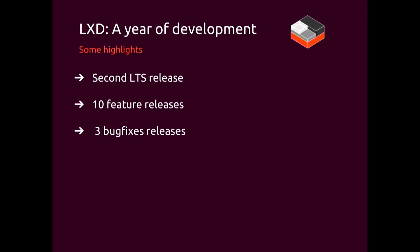It was a second LTS release. Two years back we tagged LXD 2.0, and this year we did LXD 3.0, which we support with bug fix and security updates only for five years. LXD 3.0 was released in April. We've done three bug fix releases on top of it so far and we backport most bug fixes onto that release. We've also done ten feature releases — we're effectively on a monthly release cadence, though we skipped February and March while finishing the LTS.